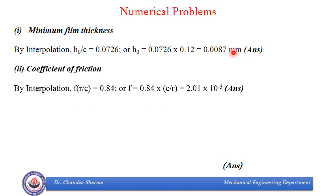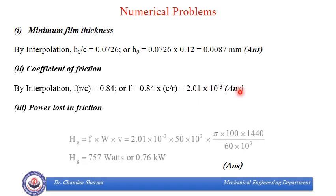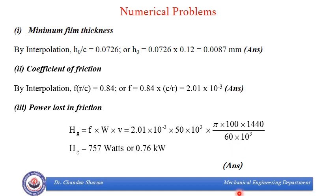Then came friction coefficient, by interpolation, F R by C is 0.84 or F is 0.84 into C by R. It came out to be 2.01 times 10 to the minus 3, which is also required answer. Then in the last, it is power loss in friction. The formula is friction coefficient into radial load into velocity. F we have already found, W is 50 kN and velocity is pi dN upon 60 in meters per second. So power loss in friction came out to be 757 watts or 0.76 kilowatt. So you can again see within very short span, we can solve such numerical.